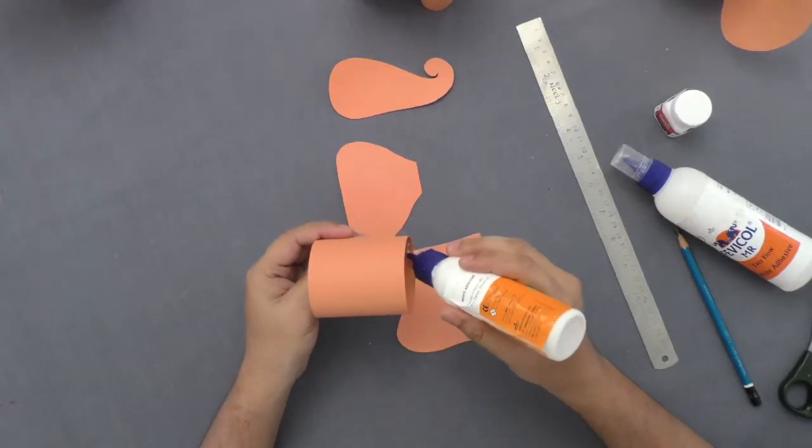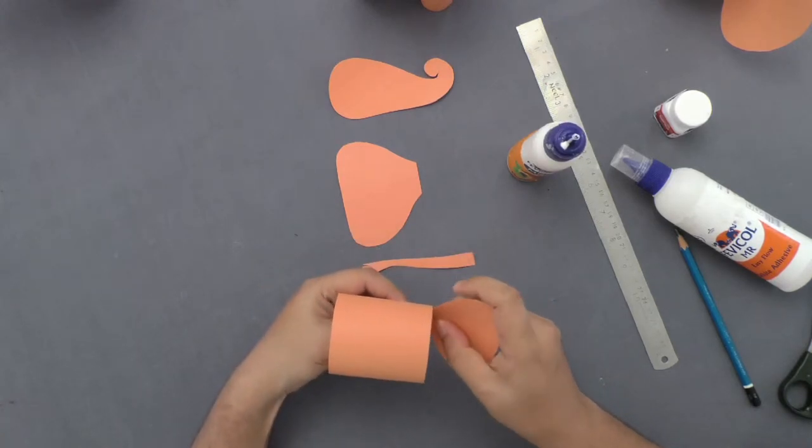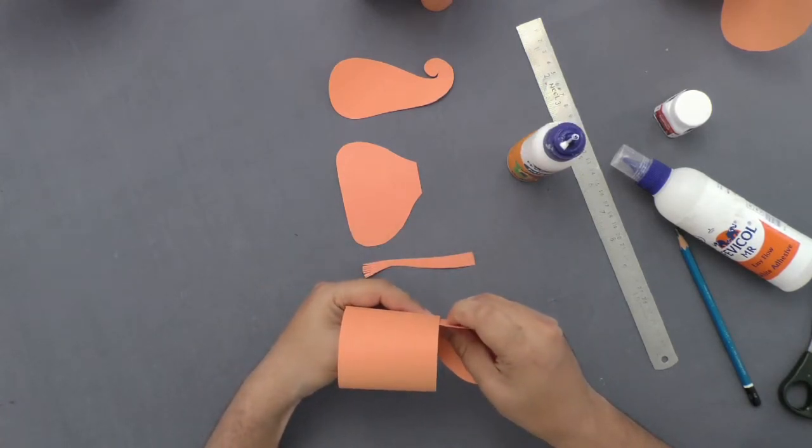Apply adhesive and paste ears and trunk on this cylinder, forming the elephant's head.